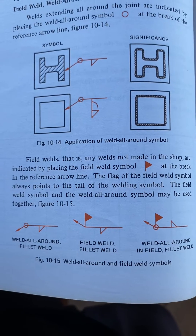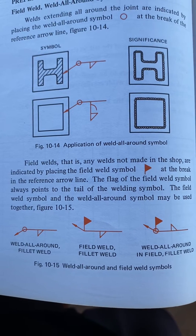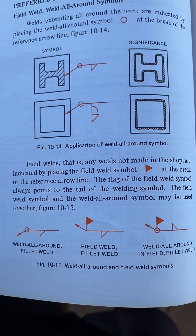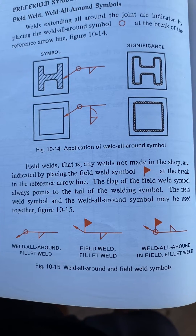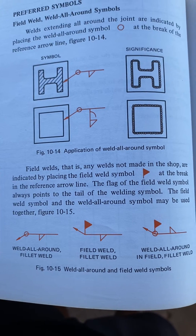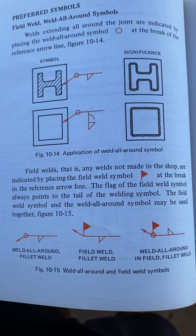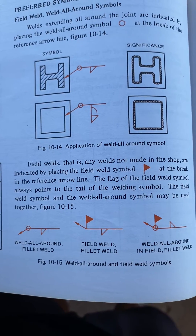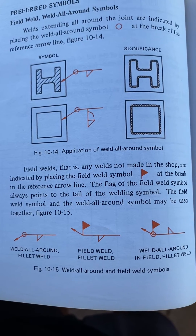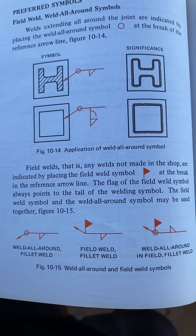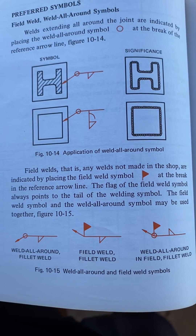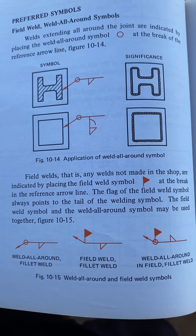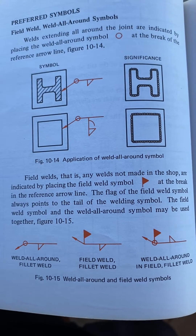Field welds — that is, any welds not made in the shop — are indicated by placing the field weld symbol, like a little flag, at the break in the reference arrow line. The flag of the field weld symbol always points to